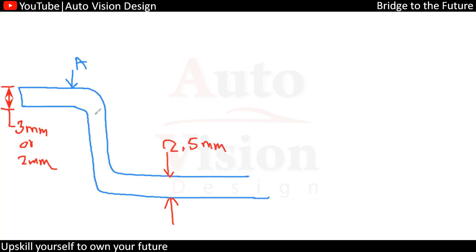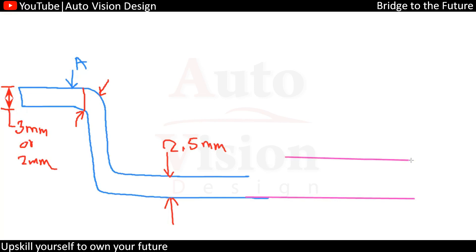There will be no issue if we have a thickness variation on the flange area — the fillet will take care of that, so no sink mark will happen. But if the thickness change is somewhere along this flat line, something like this, it is not going to be tolerated and there will definitely be a sink mark in that particular area.